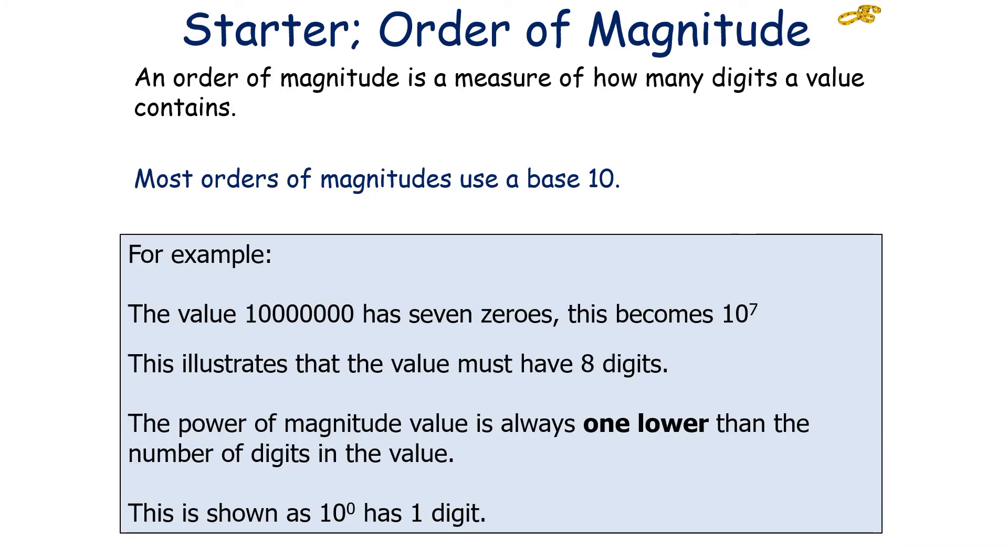The one thing you can use to estimate values is an order of magnitude. An order of magnitude is a measure of how many digits a value contains. Most orders of magnitude use a base 10. For example, the value 1,000,000 has 7 zeros, so this becomes 10 to the 7.